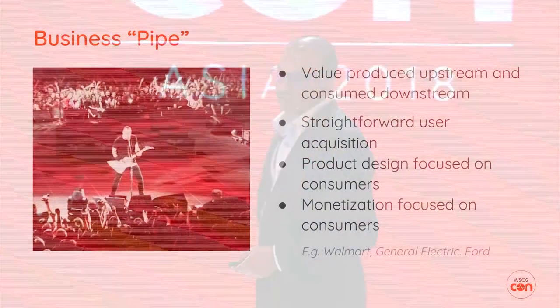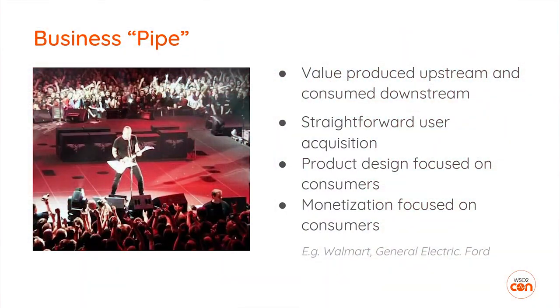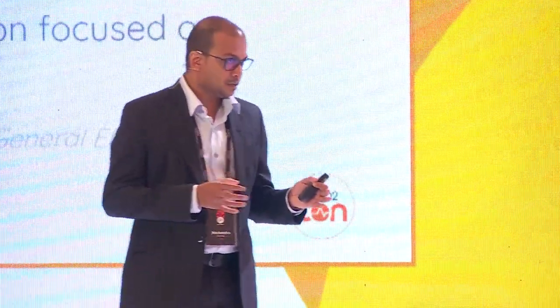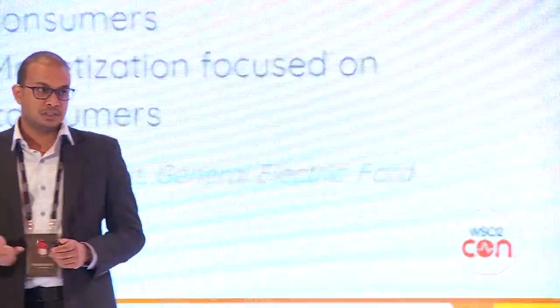We are all familiar with business pipes. A business pipe is a simple business where value is produced upstream and consumed downstream. There's a very straightforward business model and user acquisition model involved. Product design is primarily focused on end users or consumers, and monetization is straightforward because you know exactly who's going to consume your services. Good examples of a business pipe are businesses like Walmart, General Electric, and Ford Motors.